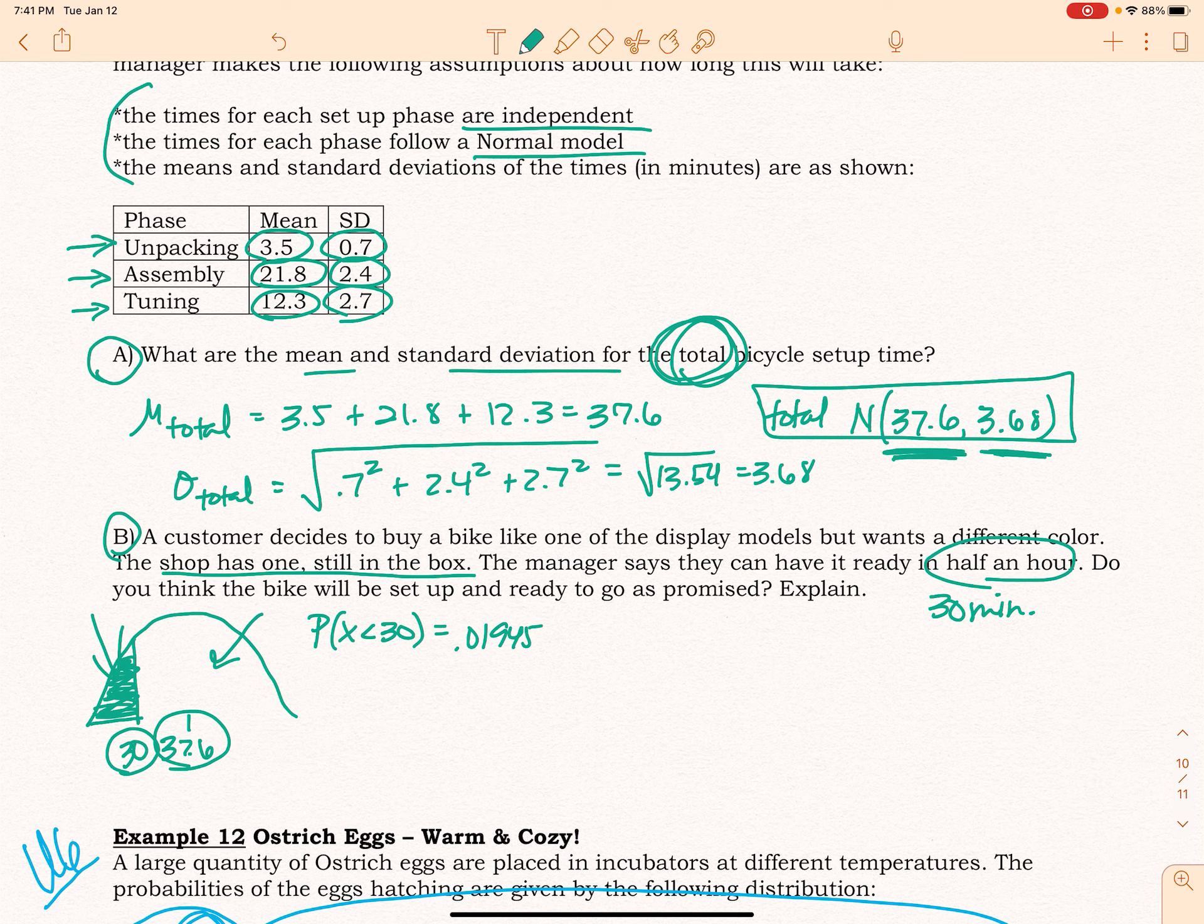You could also take the z-score approach by just finding that z-score. You get negative 2.05. Keep in mind that the more standard deviations below or above the mean you are, the more unrealistic or unusual that value is. And as you can see, our probability is less than 2% that they're going to have this bike done in 30 minutes or less.